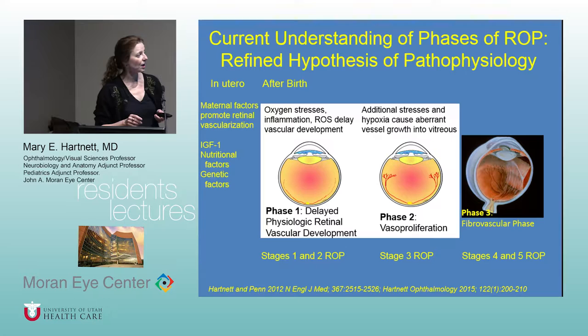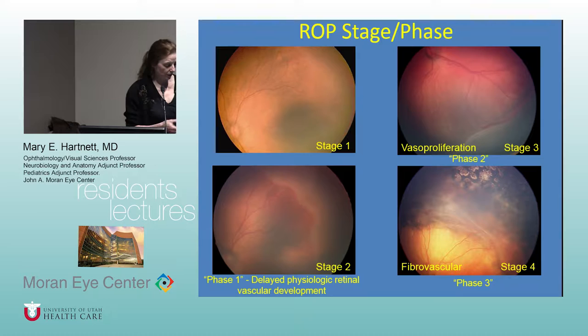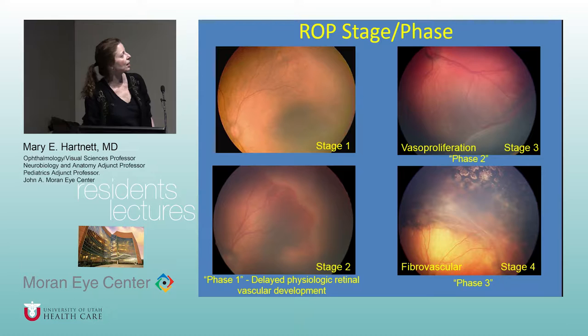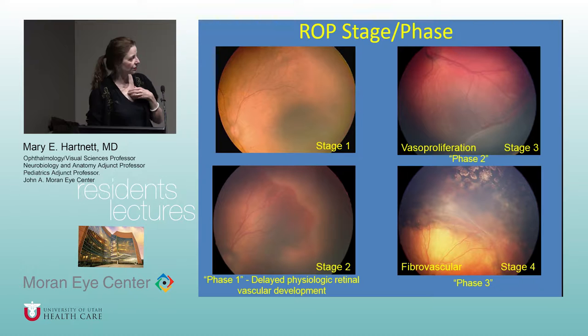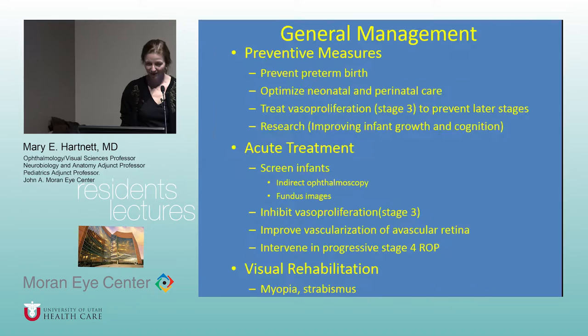There's actually a third phase in human ROP — the fibrovascular phase — where you develop a retinal detachment, either partial (stage 4) or total (stage 5). Here are some RetCam images from a human infant. Stage 1 is just a hint of a line in the periphery with avascular retina; stage 2 is when that line gains volume and thickness; stage 3 has extraretinal neovascularization; stage 4 is retinal detachment. Phase 1 corresponds to the left images, phase 2 to upper right, and phase 3 to the lower right panels.